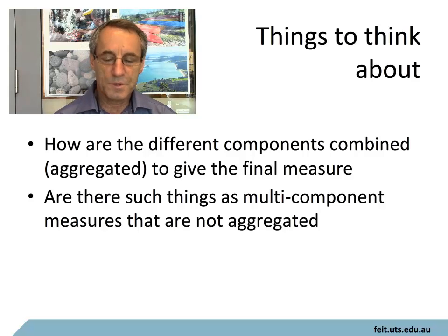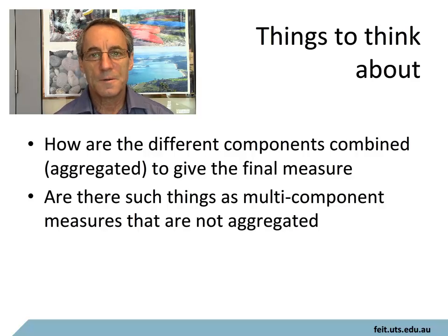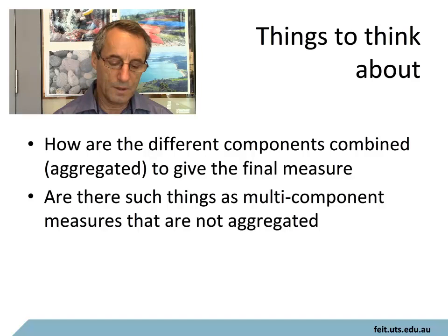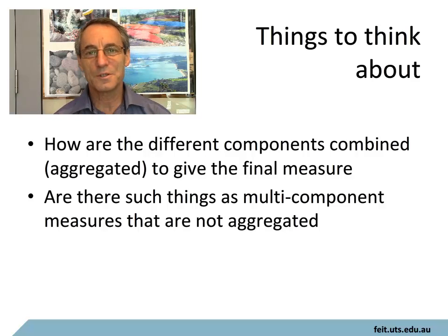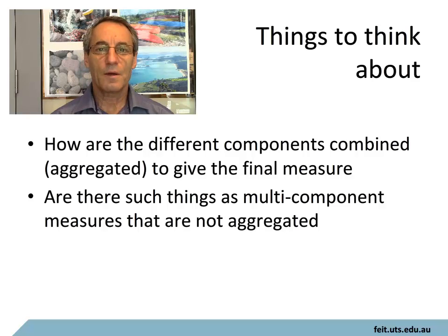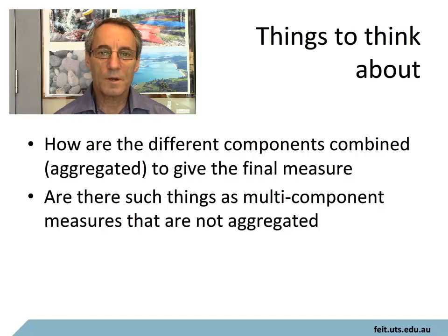Composite Measures. I'll talk a bit about composite measures because they do come up from time to time. Things to think about as we look into this are how different components are combined in a composite measure. Aside from the basic definition of a composite measure being something made up of a number of other measures, the question is how do you aggregate everything to get your final result? And are there such things as multi-component measures that are not aggregated?